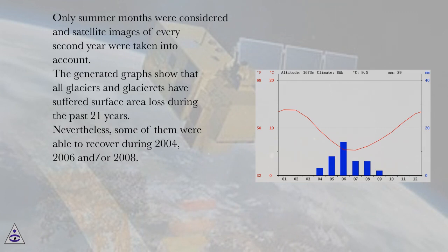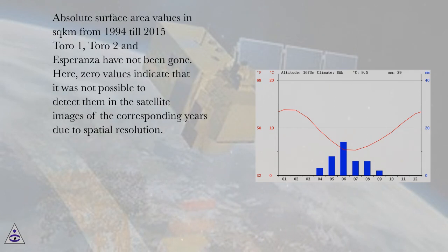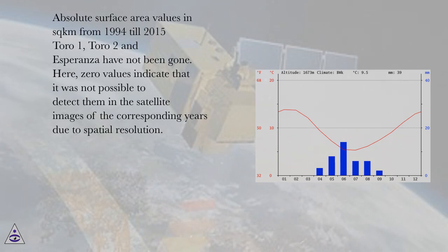Nevertheless, some of them were able to recover during 2004, 2006, and/or 2008. Absolute surface area values in sq km are shown from 1994 to 2015. Toro 1, Toro 2, and Esperanza have not entirely disappeared; zero values indicate that it was not possible to detect them in the satellite images of those years due to spatial resolution.